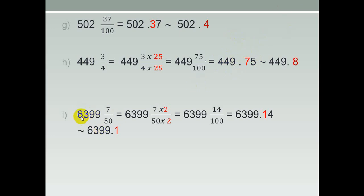The last one: 6399 and 7 over 50. What can I do? The denominator is 50, a power of five. Multiply by 2 over 2: seven times two is 14, and 50 times two is 100. So it becomes 6399 and 14 over 100. Put the decimal point after two digits from the right: 6399.14. Where is the tenths? One. Look to the next digit: four. Four is a weak number, so leave one the same. Thank you.